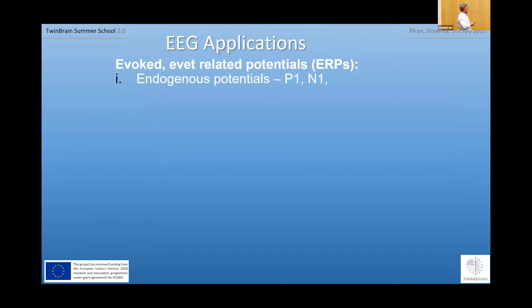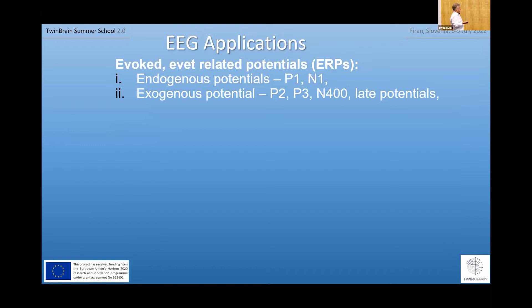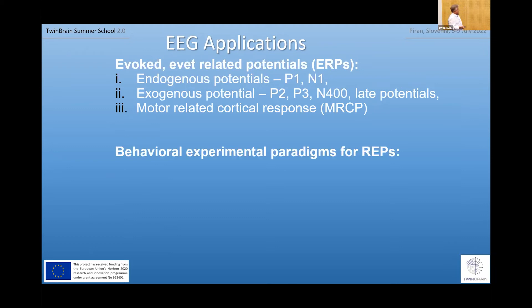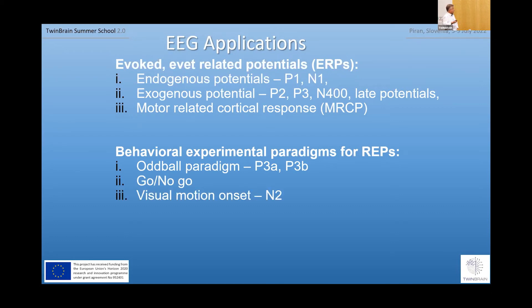A little bit about evoked potentials. We have exogenous components — early up to about 150 milliseconds after stimulus, most prominently P1 and N1. Endogenous components start after 200 milliseconds: P2, P3, N400, and some late potentials. We can also talk about motor-related cortical responses. There are many different experimental paradigms: the most frequent is the oddball paradigm, which generates P3A and P3B. Go/no-go tasks. Visual motion onset is the task we mostly use. Face perception, and so on.